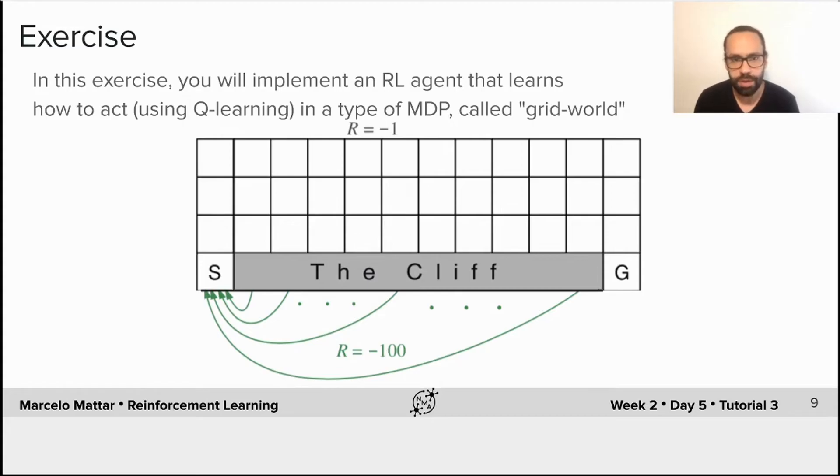So in the exercise that you're going to start shortly, you will implement a reinforcement learning agent that learns how to act using Q-learning. And we're going to use one of the simplest types of MDP possible called grid world.